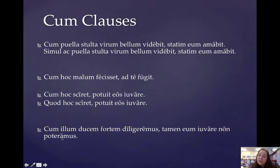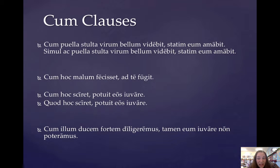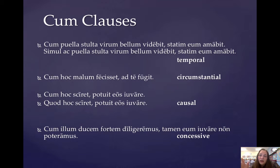You could use cum here, or you could use quod or quia: quod hoc sciret, potuit eos iuvare. And this last one is the concessive. Cum here is going to translate 'although': 'Although we respect that brave leader, nevertheless — non poteramus eum iuvare — we were not able to help him.' So I've given you an example of the temporal, circumstantial, causal, and concessive clauses. For temporal and causal, there's more than just the cum conjunction that can set them up, so I gave you another example of those.